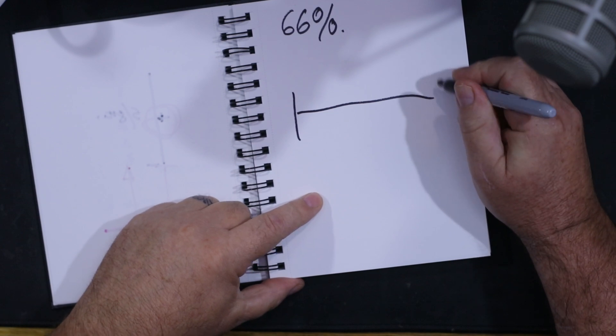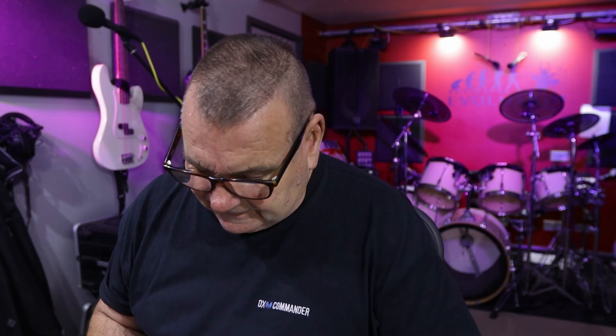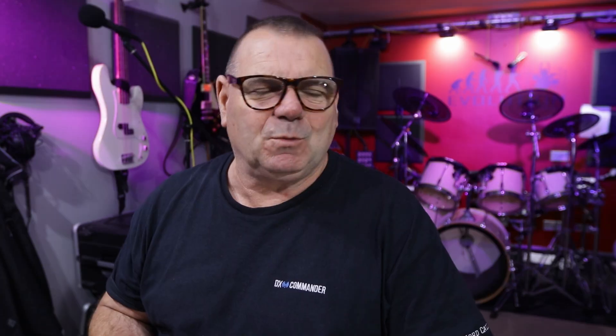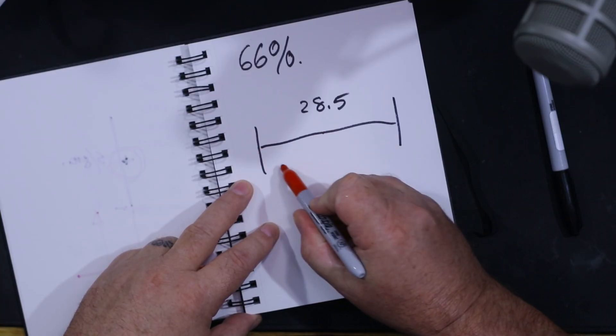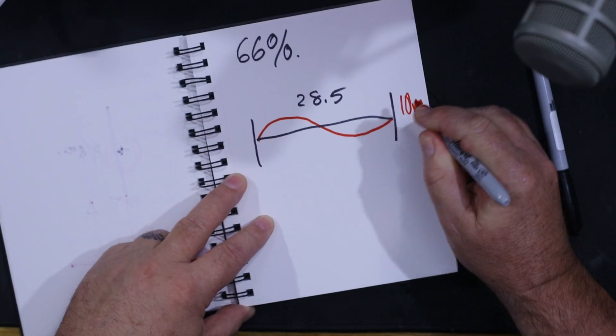We'll use the 10-meter band because it's nice and easy. We know the 10-meter band is at 28.5 MHz, give or take. We know that the wavelength at 30 MHz would be exactly 10 meters, so it's about 10 and a half meters — but let's just say the wavelength is 10 meters. So the wave goes up, and down, and back — there is our 10 meters of wavelength.